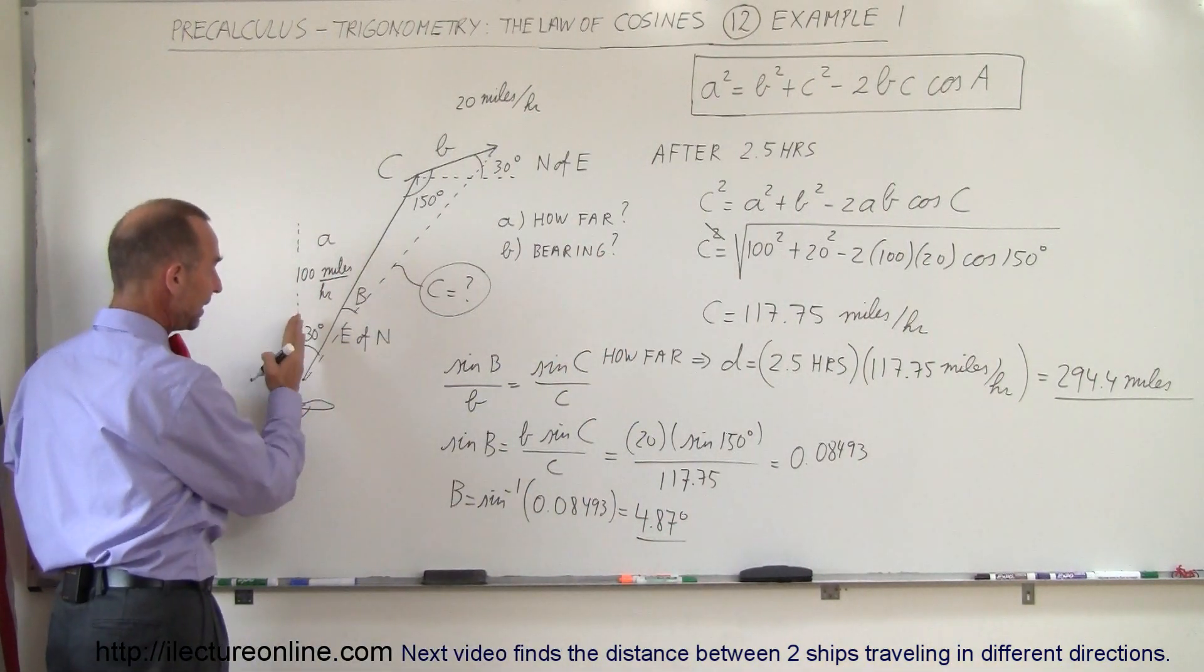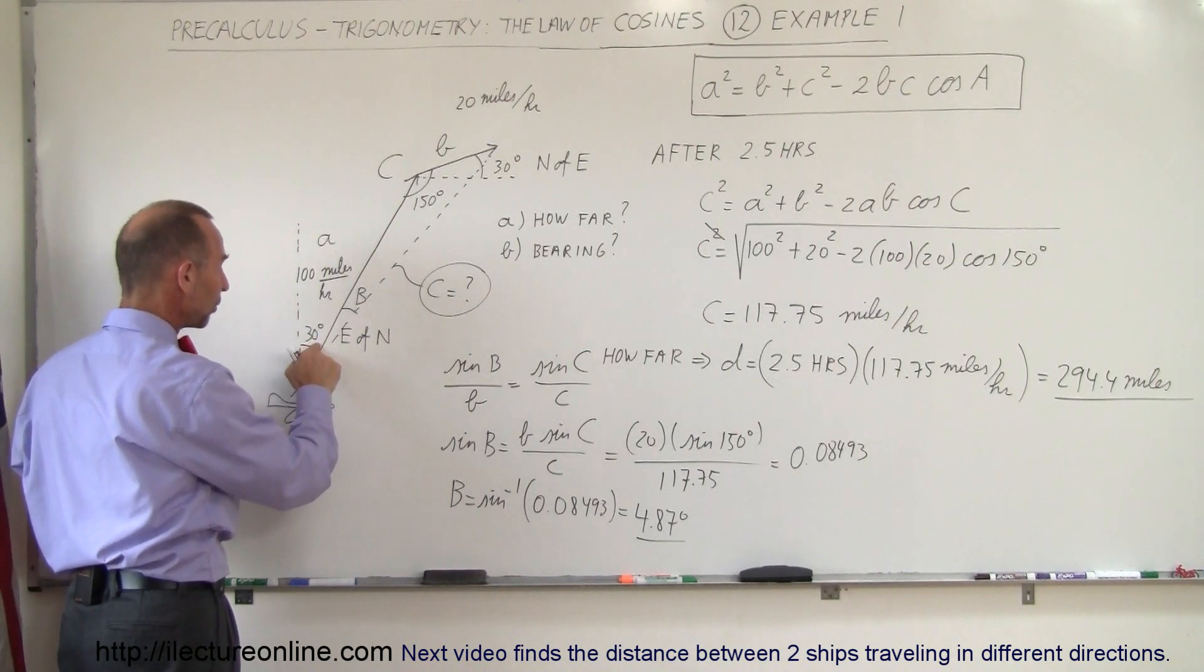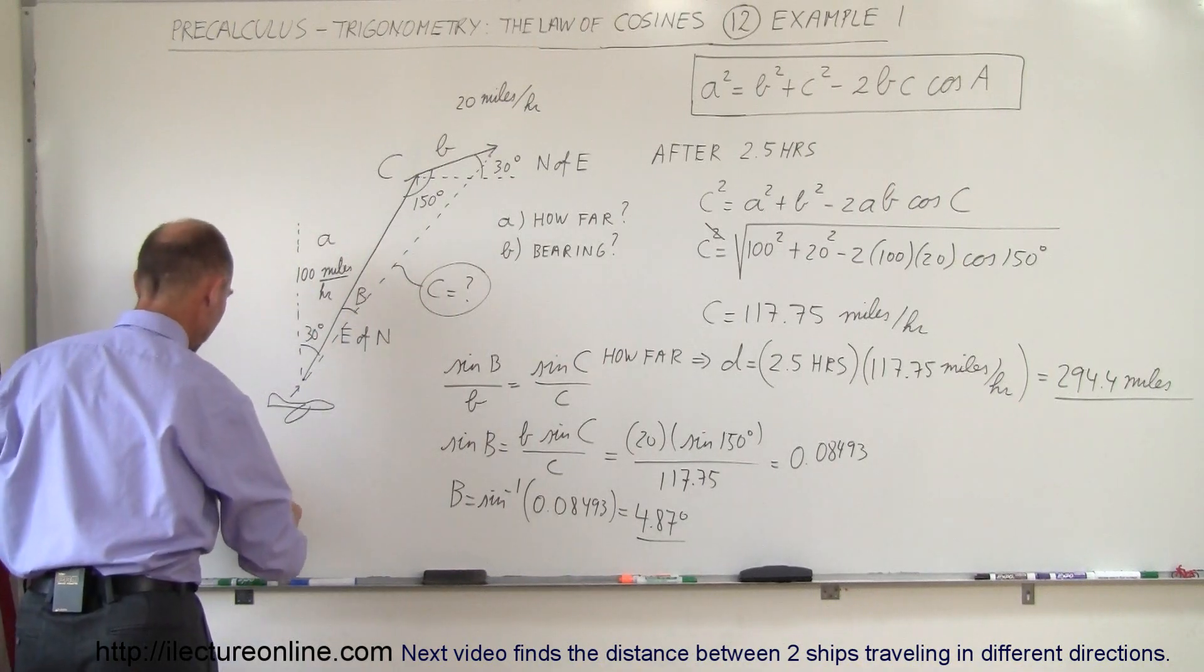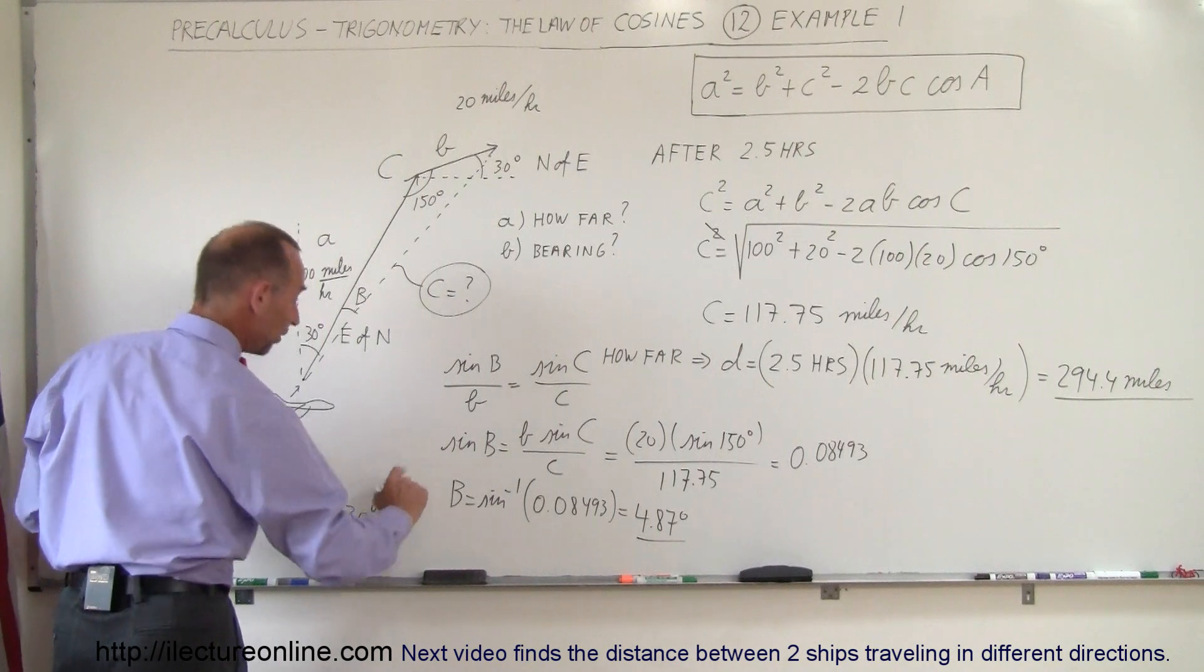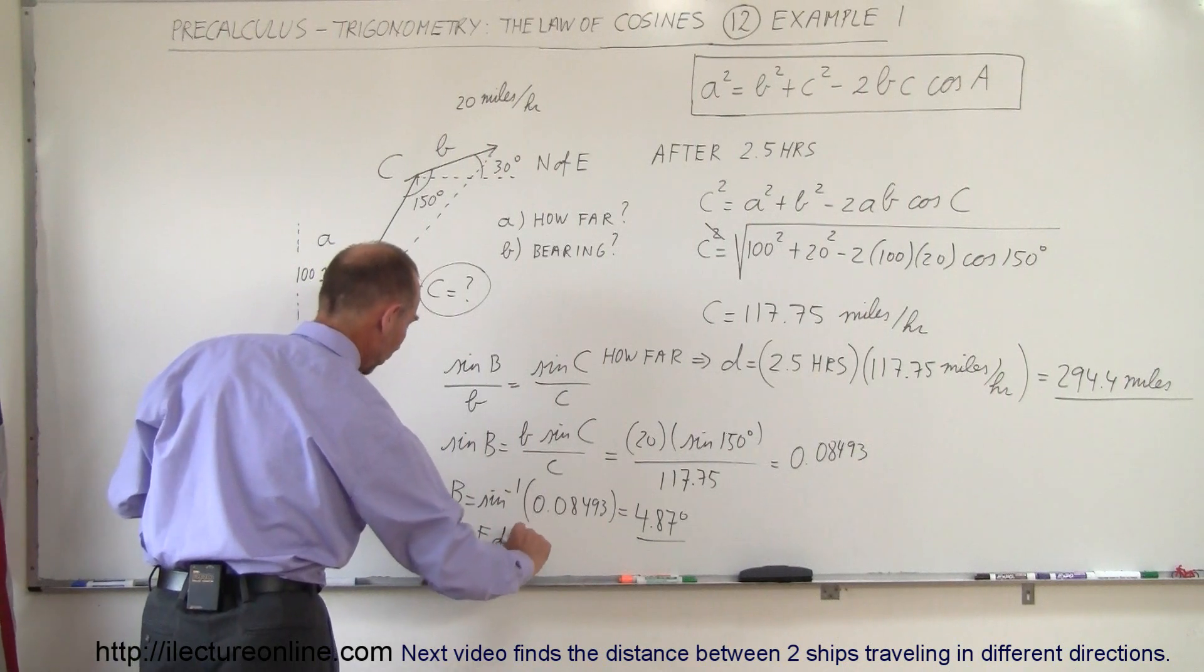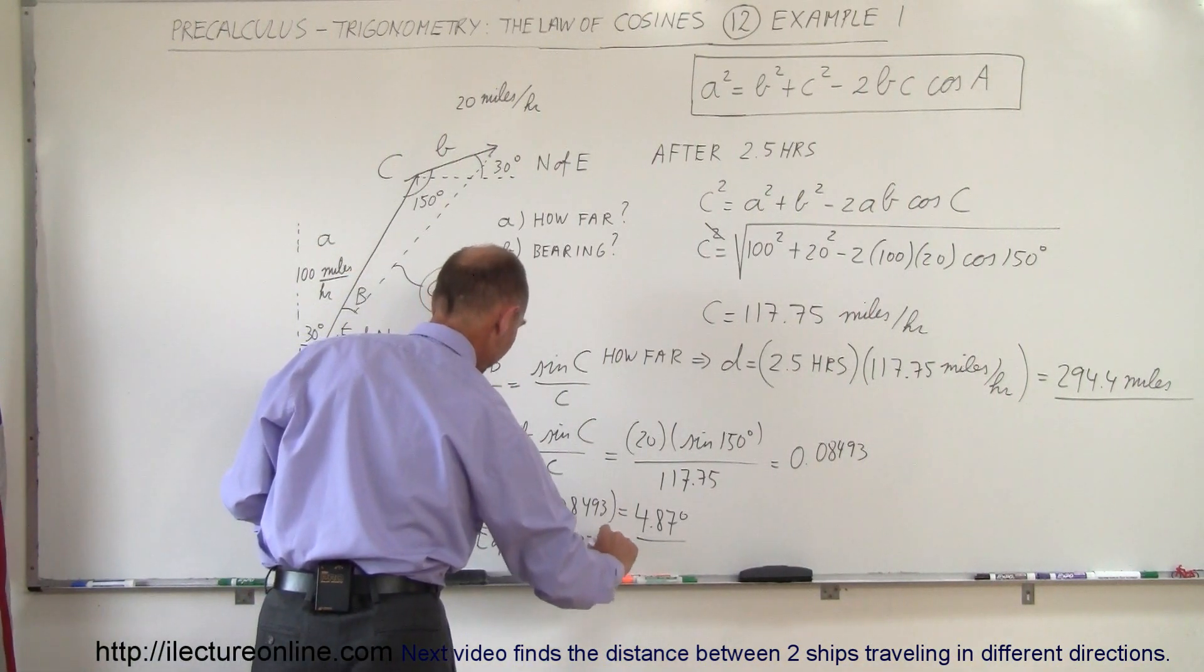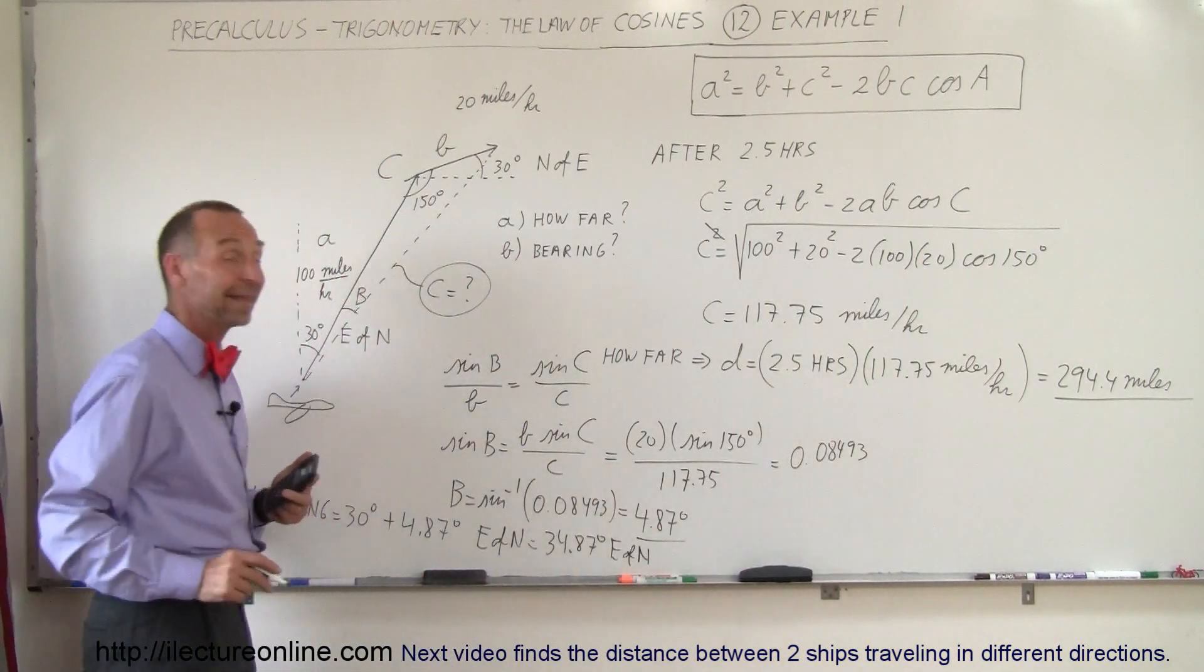Now, for heading, if we add that to the 30 degrees, we can then say that the heading is 30 degrees plus B east of north. So therefore the heading is equal to 30 degrees plus 4.87 degrees east of north, or if you combine them would be 34.87 degrees east of north. And that's how we do that.